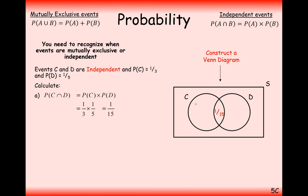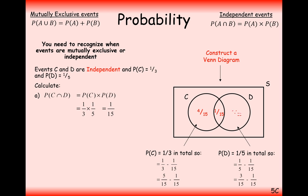Working out the other regions of the Venn diagram: the region in C only is P(C) minus the intersection = one-third minus 1/15 = 4/15. The region in D only is P(D) minus the intersection = one-fifth minus 1/15 = 2/15. The remaining region outside both circles adds up to 8/15, so that all regions sum to 1.